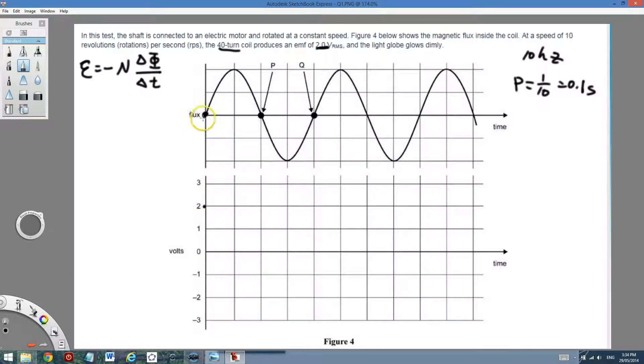If you look at the gradient of the graph, the gradient is positive. So I should have 2 here. But Lenz told me I need to put a minus in the opposite direction. So at this point, the EMF will be minus 2. The gradient is positive.